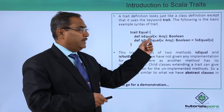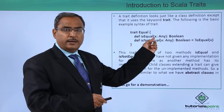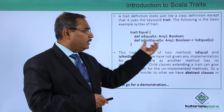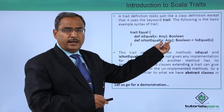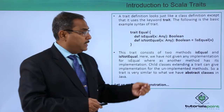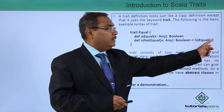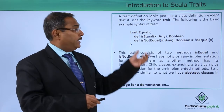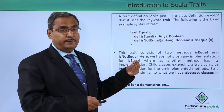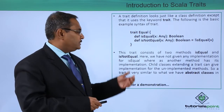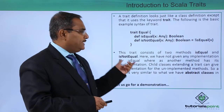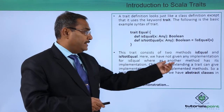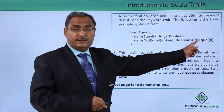The method 'isEqual' takes x as one input argument of any data type and returns Boolean. 'isNotEqual' is another method which takes x as the input parameter of any type and also returns Boolean, equal to 'not isEqual(x)'. This trait consists of two methods: isEqual and isNotEqual. We have not given any implementation for isEqual, whereas the other method has its implementation.